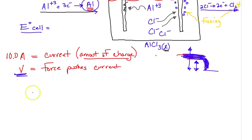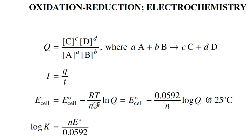So what is amperage? Well in your reference table there's a formula. Let's go there. So on the last page where you see oxidation reduction electrochemistry section, you'll see I equals Q over T.